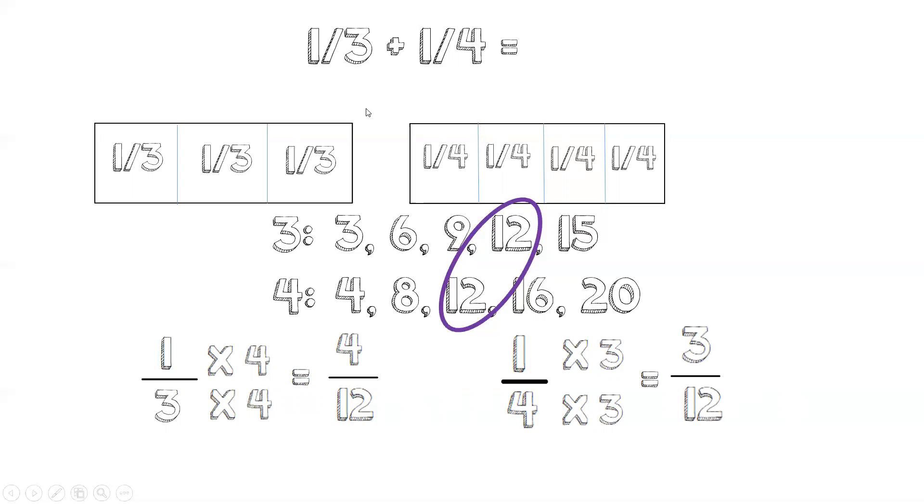So instead of one-third plus one-fourth, we have four-twelfths plus three-twelfths, which will give us four plus three is seven, and the twelfths are the same, and the answer is seven-twelfths. Thank you guys for joining us today.